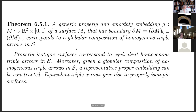We're going to take a surface embedded in R² cross I. You can decompose the boundary into two pieces — either may be empty, both may be empty, and they don't have to be connected — but they have to be properly embedded so that one piece is at the zero level and the other is at the one level. This corresponds to a globular composition of homogeneous triple arrows in S. Properly isotopic surfaces correspond to equivalent homogeneous triple arrows, and equivalent triple arrows give rise to properly isotopic surfaces.